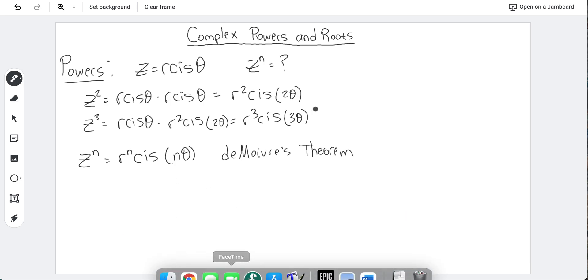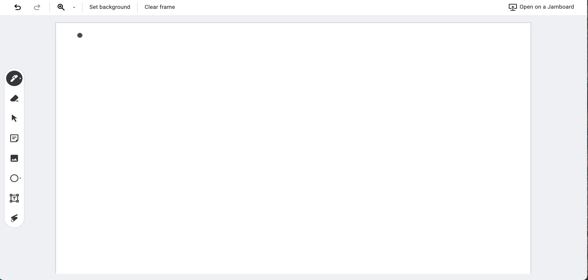So we want to use this now and try to go backward and say, okay, we have powers, let's see if we can use roots. A good guess might be that z^(1/n) is equal to r^(1/n) cis (θ/n). Since this is literally taking De Moivre's theorem and applying one over n power as the power, since this is the same thing as the nth root of z. So good guess, but we can test it.